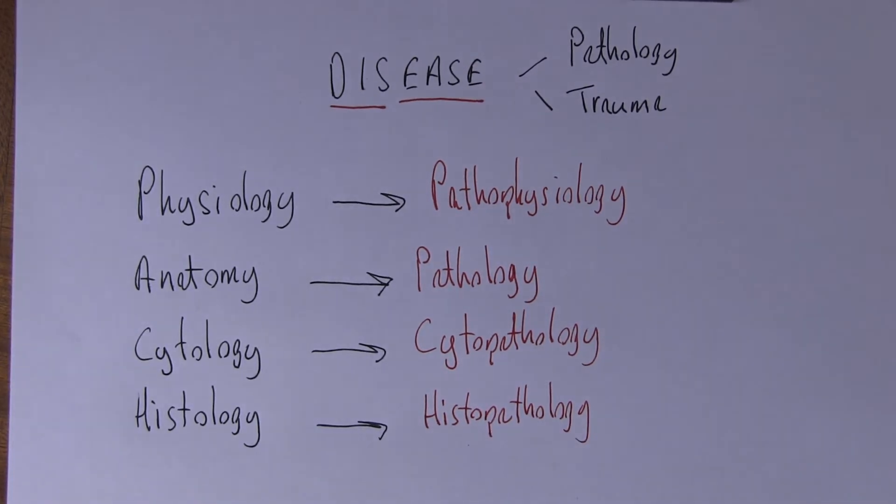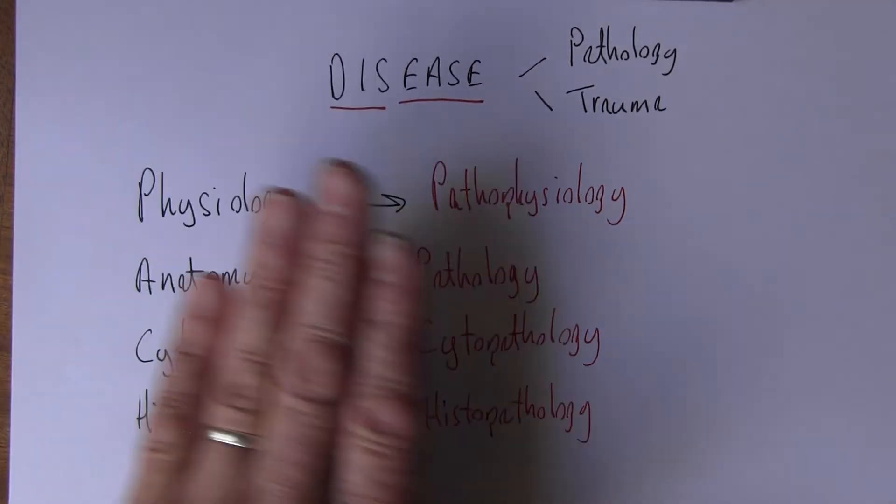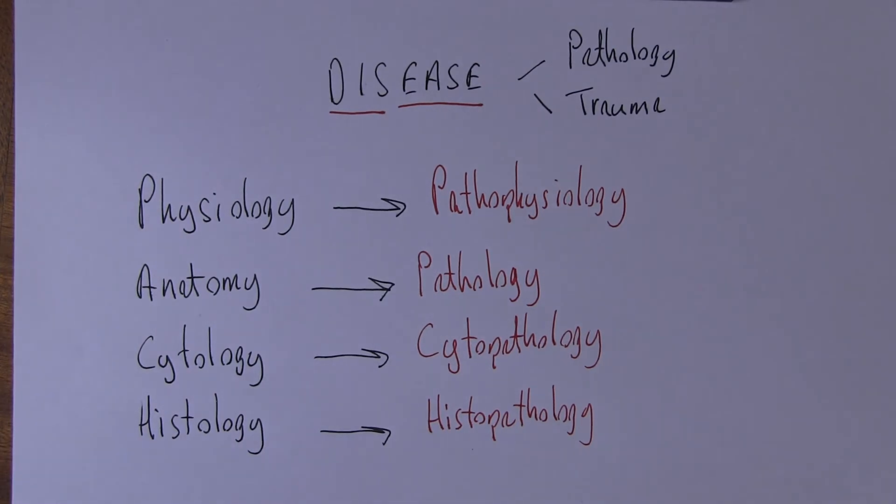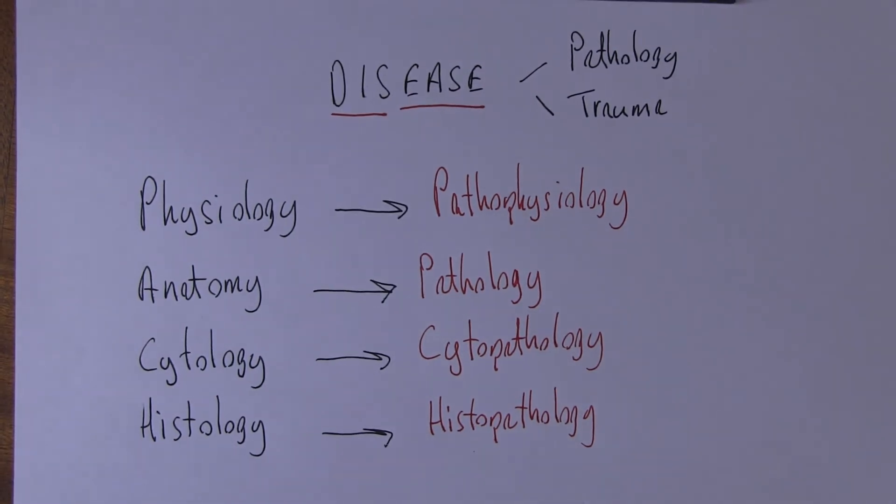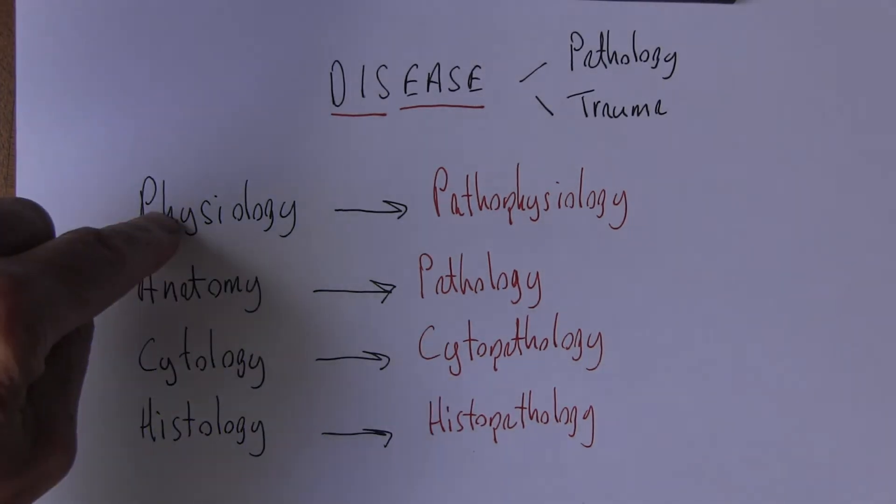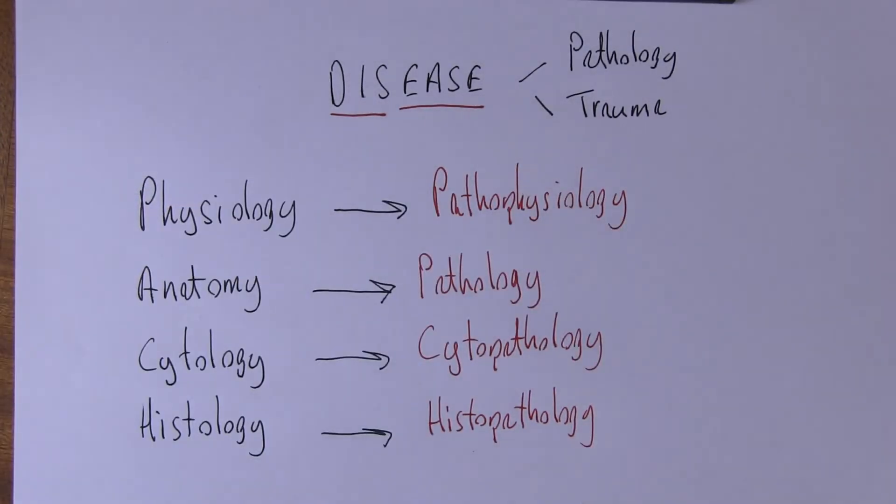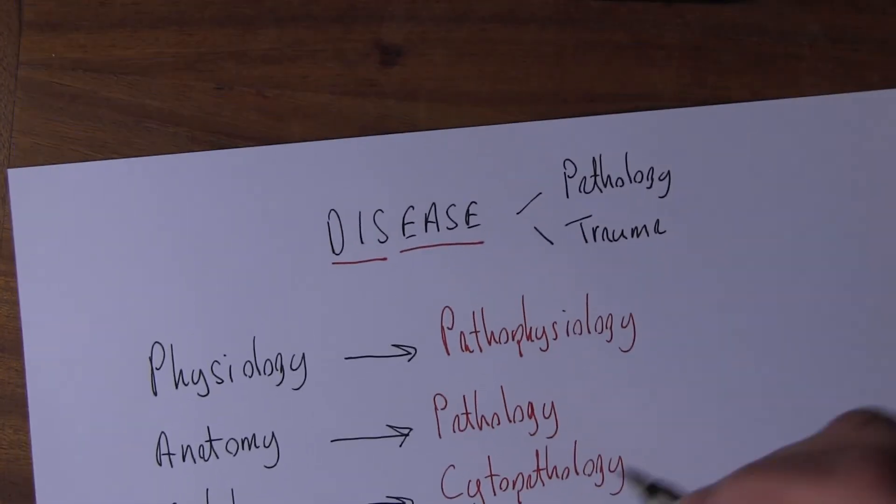We have these things that can go wrong - the normal situations, the abnormal situations. What causes one to go to the other? Why do we have a normal situation becoming an abnormal situation? It's what we don't want. And the answer there is etiology.